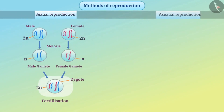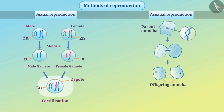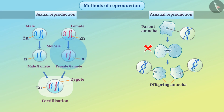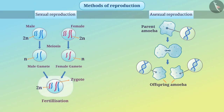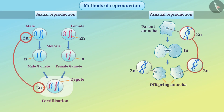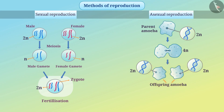In asexual reproduction, a replica of DNA is formed for the offspring. In this process, no male or female gametes are produced, and therefore there will be no fertilization and no zygote. Both kinds of reproduction are similar in that the number of chromosomes or the amount of DNA in offspring is similar to that of each parent. In asexual reproduction, offspring is formed from a single individual, therefore there are not many variations in the DNA.